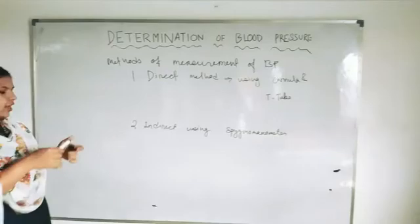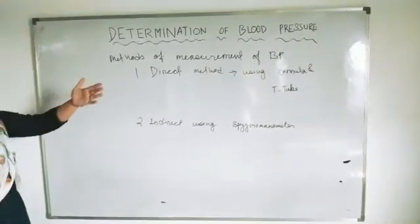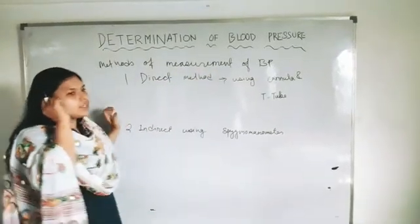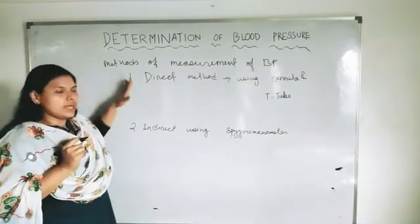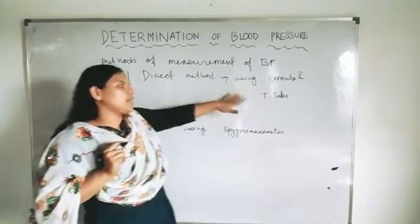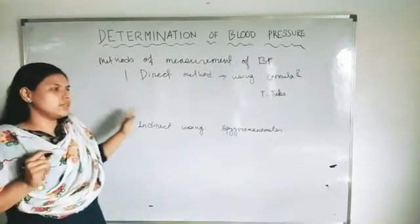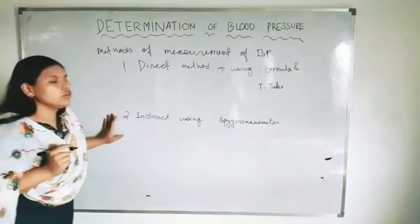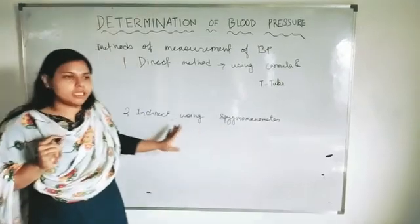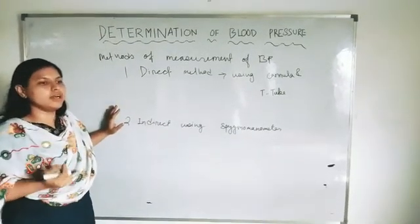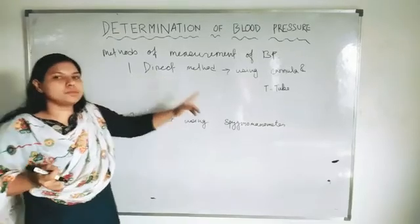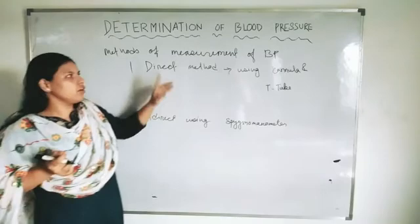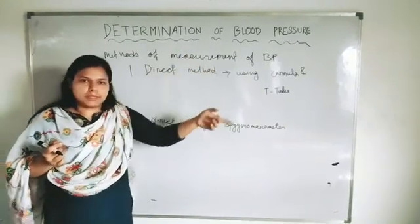Moving to the next topic, we will go to the practical approach and see the methods of measurement of BP. There are two methods to measure BP. One is the direct method, done using a cannula and tubes. The second is the indirect method, done using the sphygmomanometer. The sphygmomanometer is easy to use and can be used in our laboratory. We will use the indirect method of determination of blood pressure today.